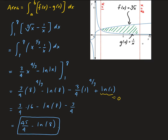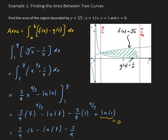If this was an application problem, this would be in whatever units are being used, squared. We take top minus bottom because if we look at the representative piece, that's a vertical piece, so the integral has to be in terms of x.